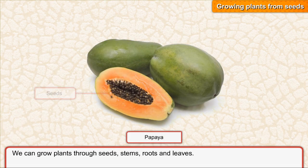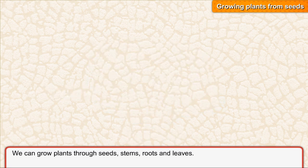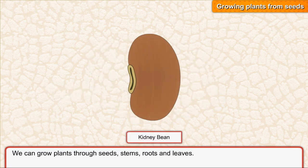Seeds are present inside fruits. New plants grow from seeds. Let us study the structure of a kidney bean seed.